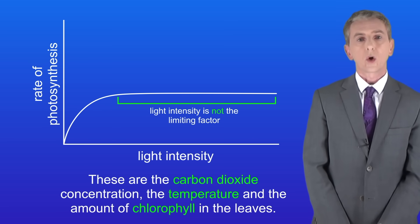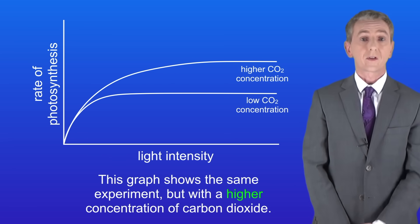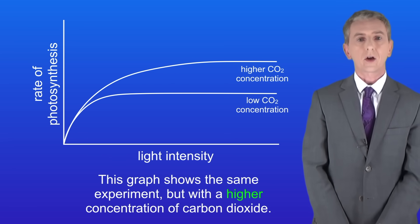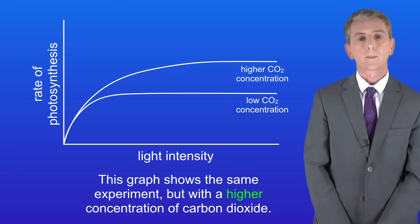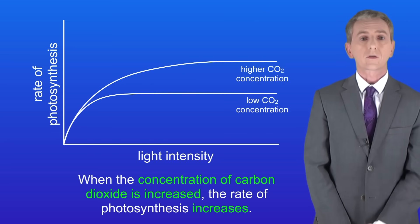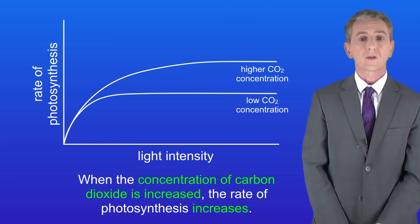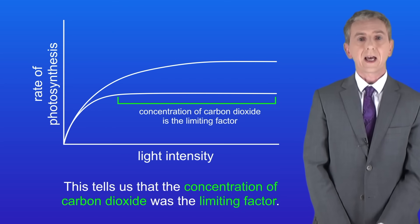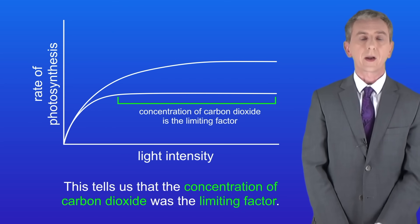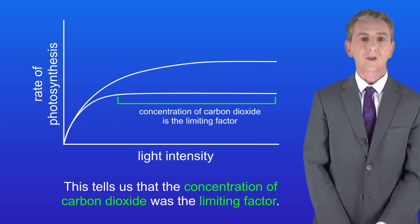This graph shows the same experiment but with a higher concentration of carbon dioxide. As you can see, when the concentration of carbon dioxide is increased, the rate of photosynthesis increases. This tells us that the concentration of carbon dioxide was the limiting factor.